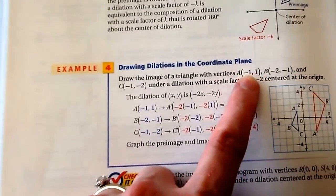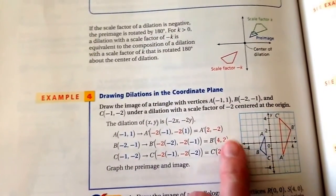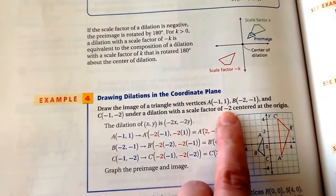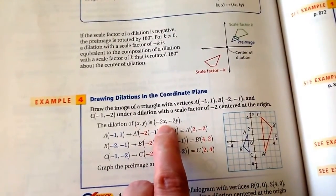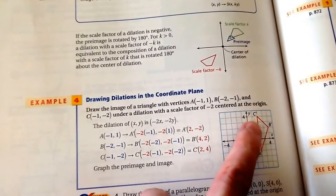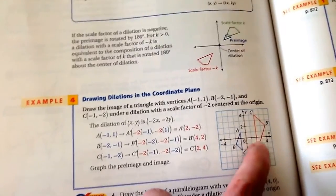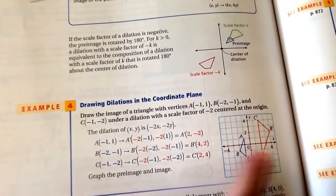Now if you're doing this on a coordinate plane and you're just given points, for example, here's the vertices of point A, B, and C, and there it is in blue. And it gave you a scale factor of negative two. So all you do is multiply each point by negative two. And that would give you your new points. And notice your new point is rotated in a counterclockwise direction, 180 degrees.